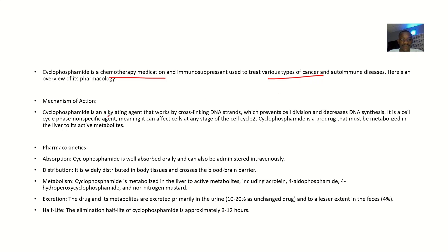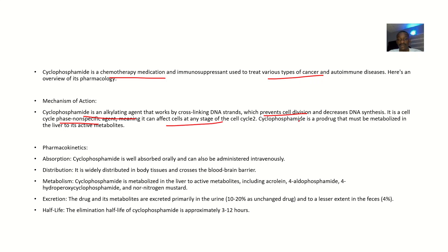For mechanism of action, cyclophosphamide is an alkylating agent that works by cross-linking DNA strands. This will prevent cell division and decrease DNA synthesis. It is a cell cycle phase non-specific agent, meaning it can affect the cell cycle at any stage — there is no specific stage it targets.